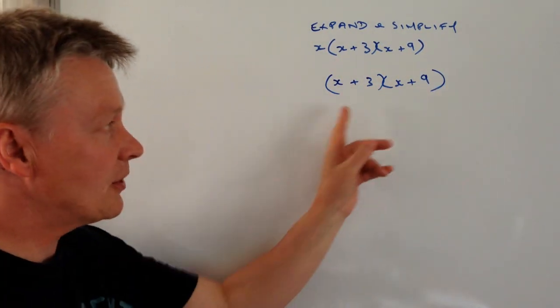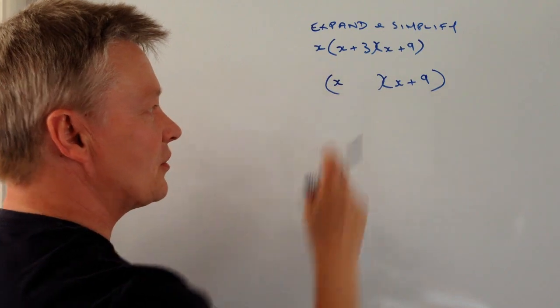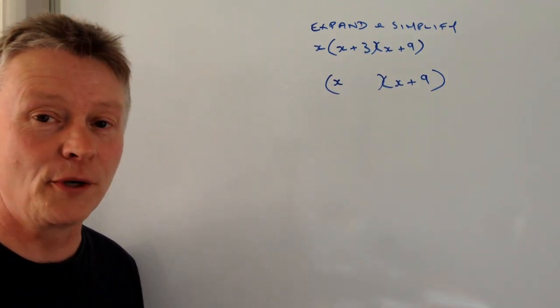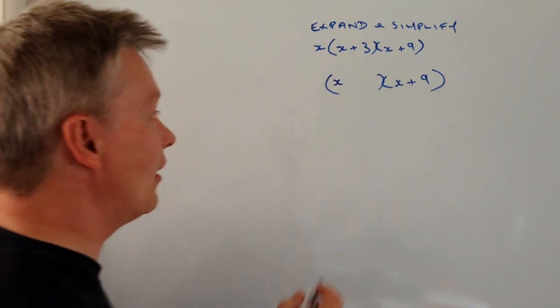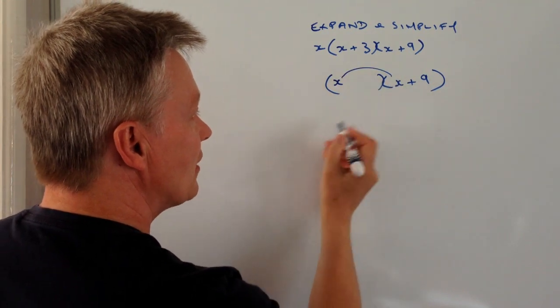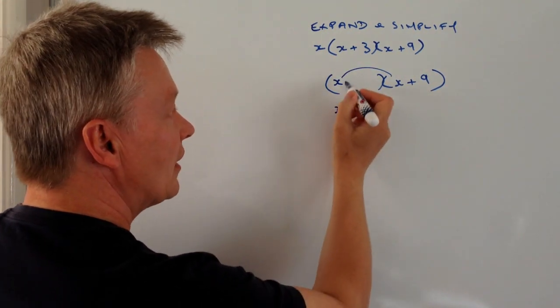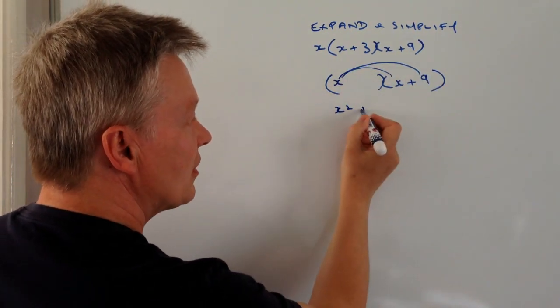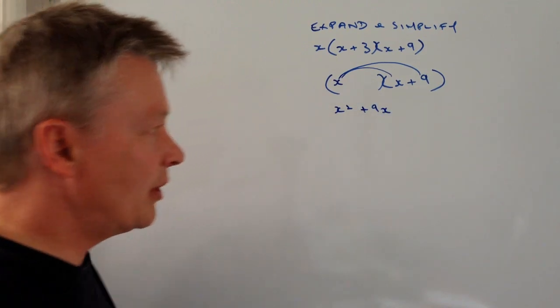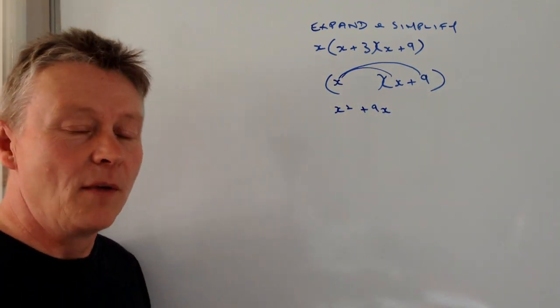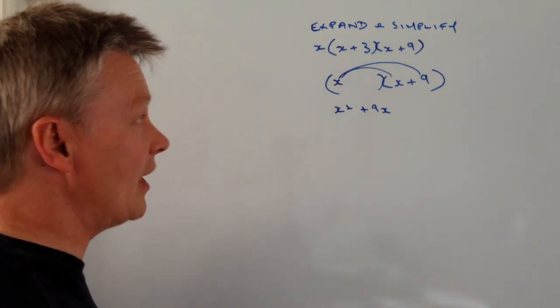Let's just for a moment imagine that I don't have this plus 3 here. I'm going to multiply through by the x on its own. So I've got x times x is x squared and then I've got plus 9x. And that will be pretty much the way that most of the other videos in the playlist are going to be addressed.